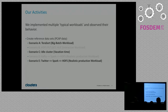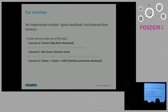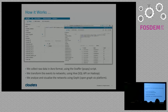We came up with a couple of scenarios and examined five in detail, but here we present three. First, a heavy batch workload called TeraSort where we read input from the distributed file system and do a big distributed sort. Second, we captured the idle cluster to have an idea of the background noise and heartbeats. Third, a more interesting approach: we reached out to the Twitter Streaming API with Spark Streaming, collected data from outside, and wrote it to HDFS.